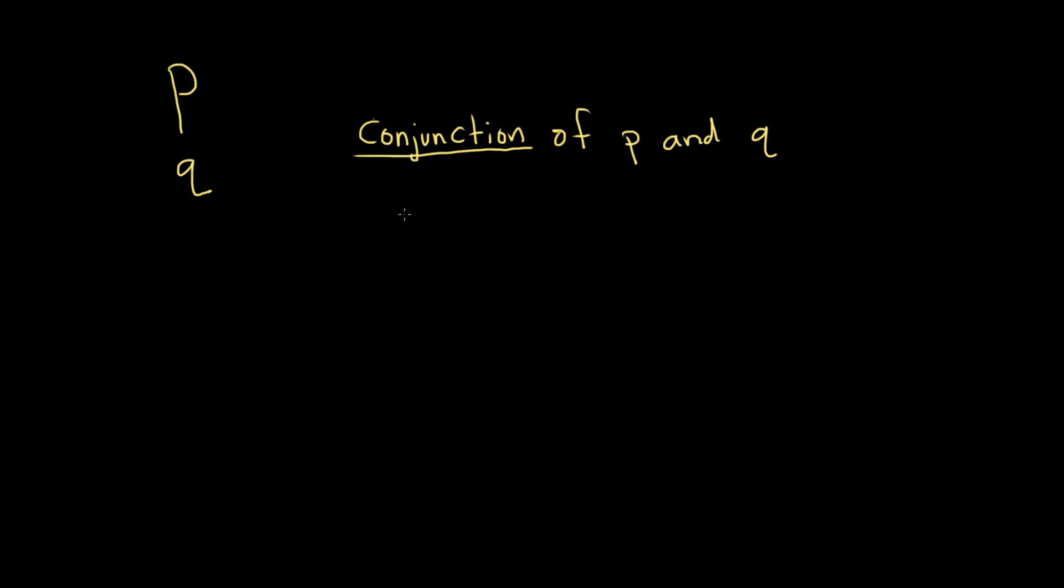And the symbol that we use is p and q. That's how you read it. You read this as p and q, and it's called the conjunction. And basically this will only be true when p and q are both true.